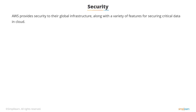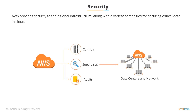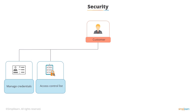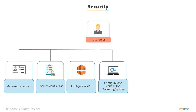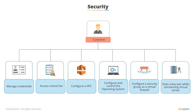Some of the security highlights of AWS include: AWS strictly controls, supervises, and audits physical access to their data centers and network. As a customer, you can manage credentials allowing access to your AWS account, configure access control list (ACL) type permissions on critical data encrypted while in storage, configure a virtual private cloud (VPC) — a virtual network logically isolated in AWS from other virtual networks, configure and control the operating system on your own AWS virtual server, configure a security group as a virtual firewall to monitor incoming and outgoing traffic for your virtual servers, and state a key pair at the time of introducing your virtual server in AWS, which is then used to encrypt login information.